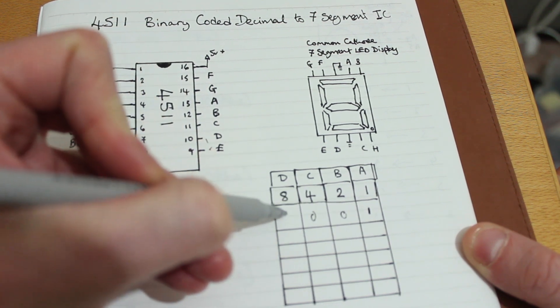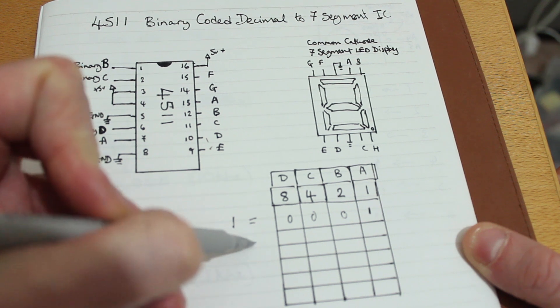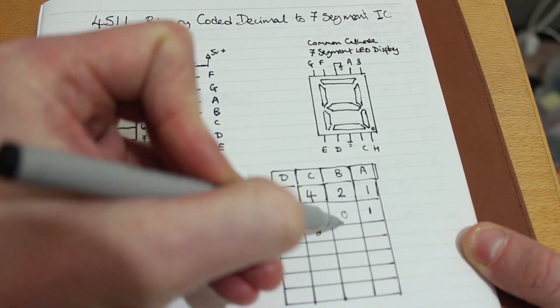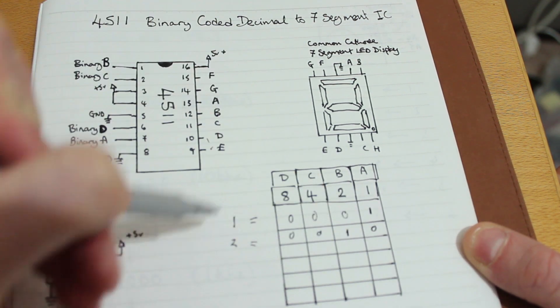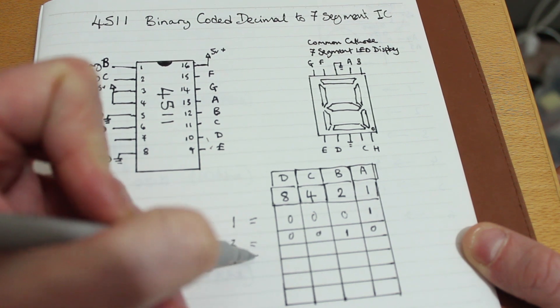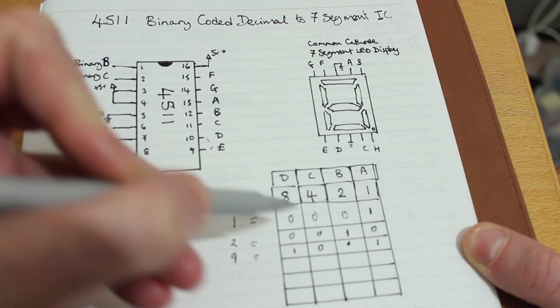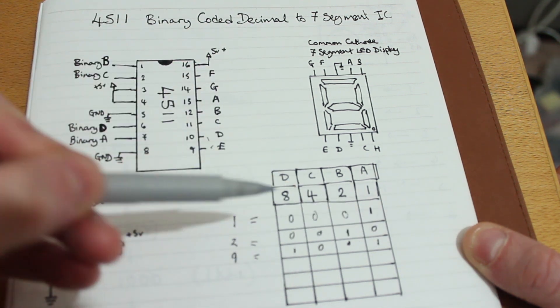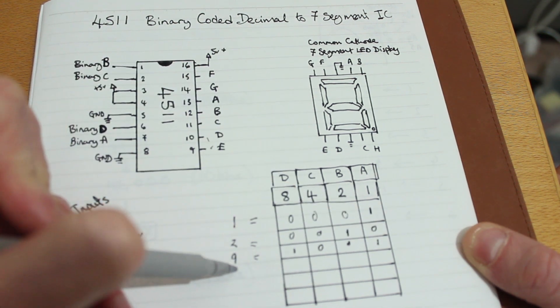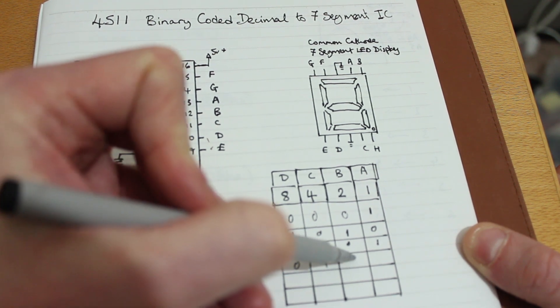So 1 would be that. 2 is that there. But let's say we want to go and do something a little bit different. So we want something a bit higher. We want a 9. So that would be 1, 0, 0, 1. But you read it that way instead. Again if we want 7, that would be 0, 1, 1, 1.